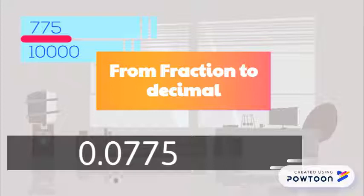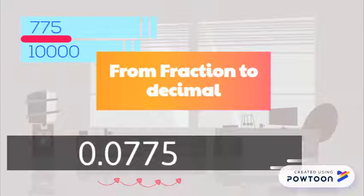I ask myself: how many zeros are in the denominator? In this case, there's four. So when I write 775, I have to make sure the five is in the last decimal spot. The issue is that there's only three digits — 775 — but there are four spots. So I have to add zeros in the open spots. In this case, 0.0775 is actually 775 ten-thousandths.